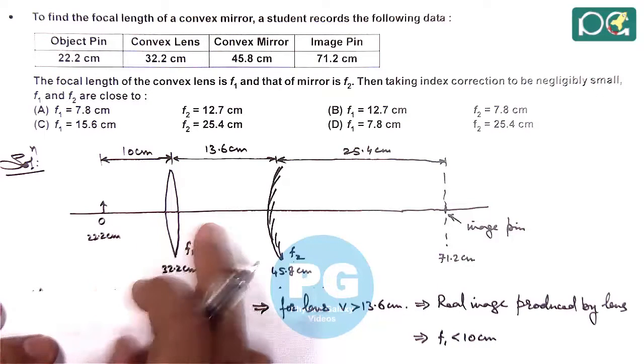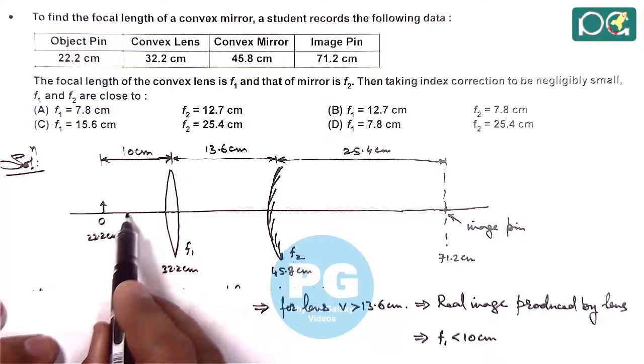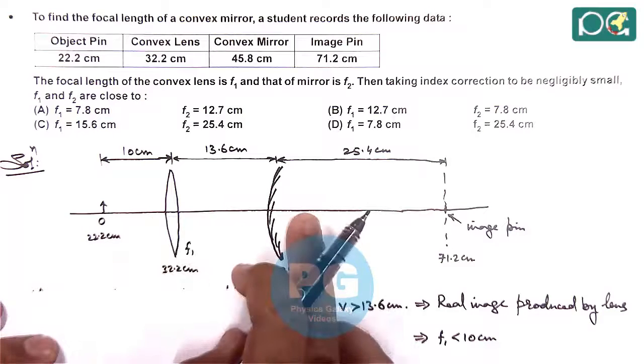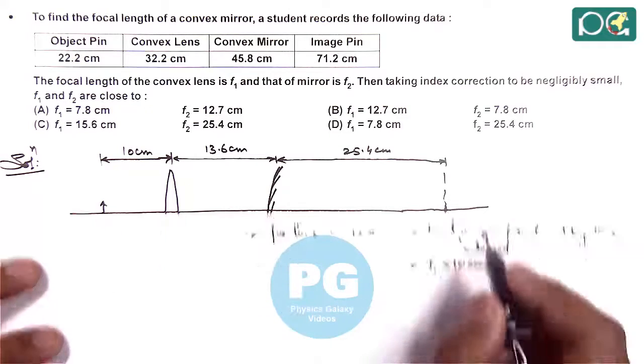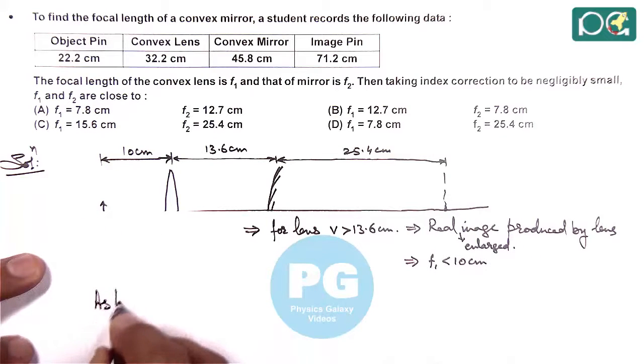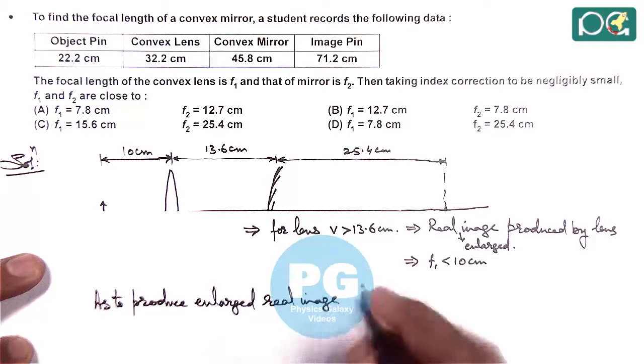Because real image is produced by lens only when object is located between f and 2f. We can also write real enlarged image, because f1 is 10 centimeter, v is more than 13.6, that means real enlarged image is produced by lens. So f1 must be less than 10 cm to produce enlarged real image for which the magnitude of v is greater than the magnitude of u.